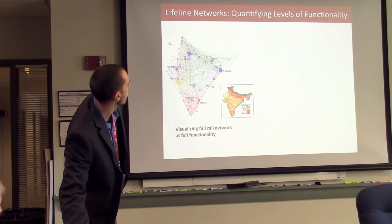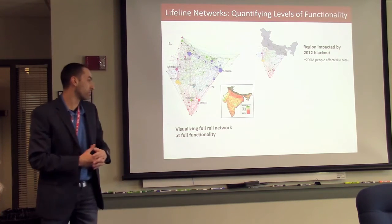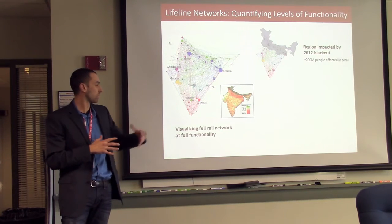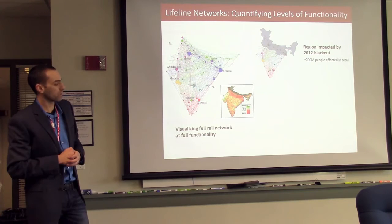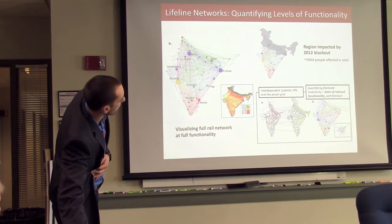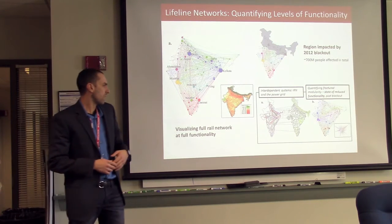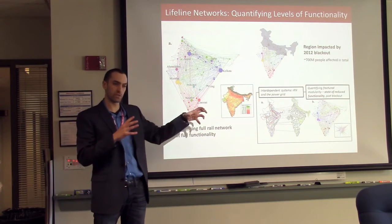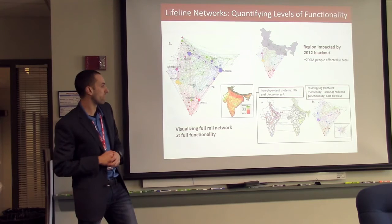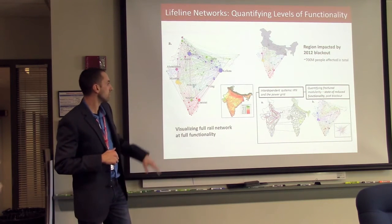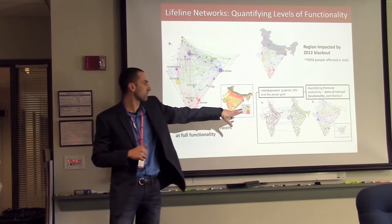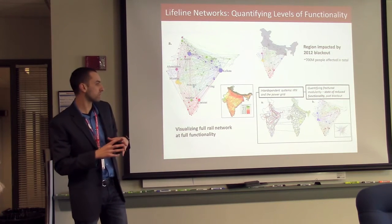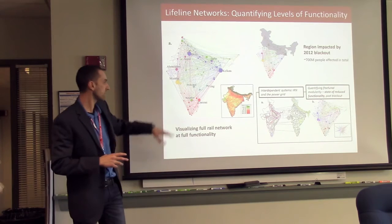So, for example, this is, we simulated, what we did was we simulated the same region that was first, where the blackout was first impacted, or where it was incurred, where 700 million people were affected in total over the course of a few days. And we can actually blend these two networks together if we want to, meaning these two different systems of the electric grid and the railway network itself, and then build this same picture, but post-blackout or during blackout as state of reduced functionality. Now we can quantitatively compare that reduced functionality to the full functionality.